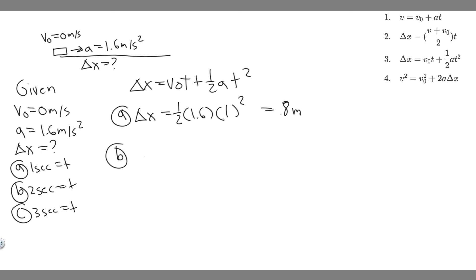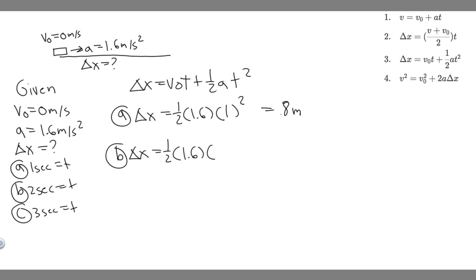Now let's do B. Delta x equals v-sub-0, which is 0, times t, which is 2 — 0 times 2 is still 0. So it's going to be one-half times a, which is 1.6, times t squared, and t is 2 for this one, so 2 squared. 2 squared multiplied by 1.6, then multiplied by one-half, gives 3.2. So 3.2 meters is how far she travels in 2 seconds.